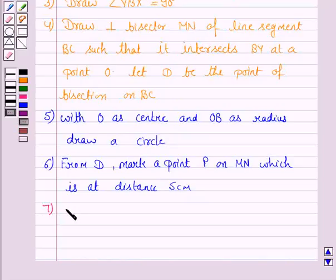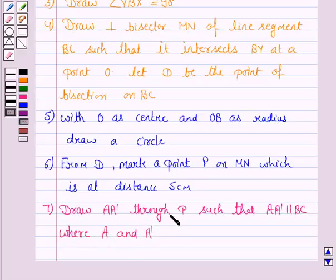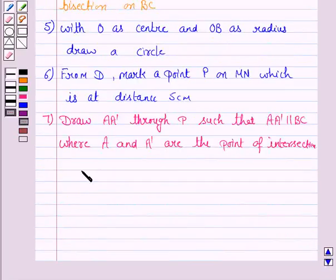Now, the seventh step is draw AA' through P such that AA' is parallel to BC, where A and A' are the points of intersection of AA' with the circle.